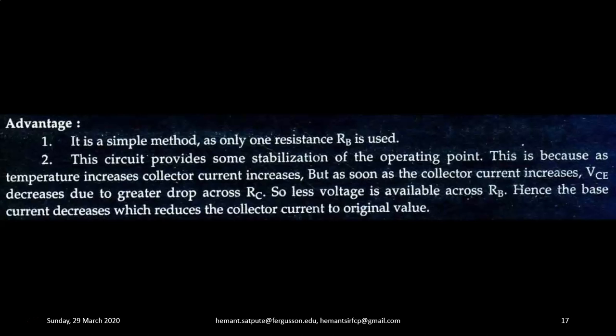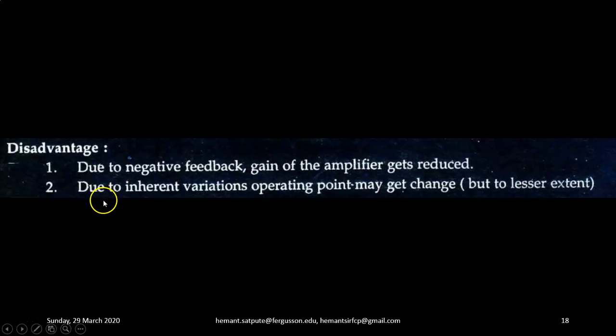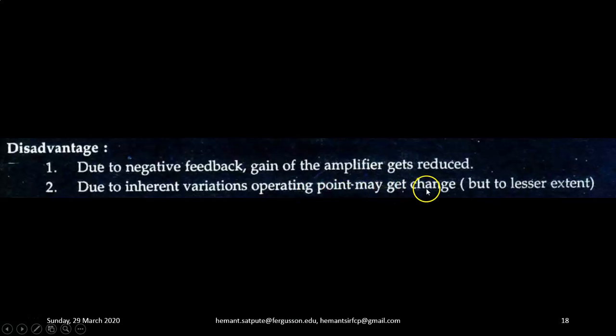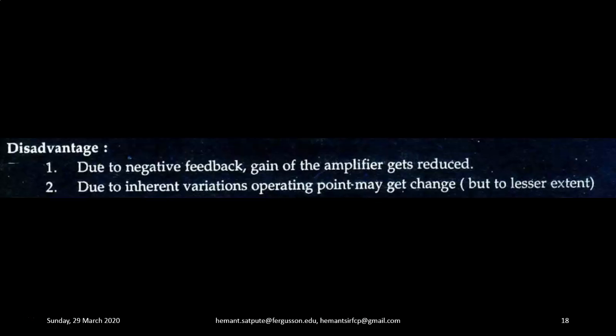Now disadvantages. Due to negative feedback, gain of the amplifier gets reduced because through RB, the collector voltage is fed back to the base input. Secondly, due to inherent variations, operating point may get changed, but to a lesser extent as compared with the previous biasing scheme.